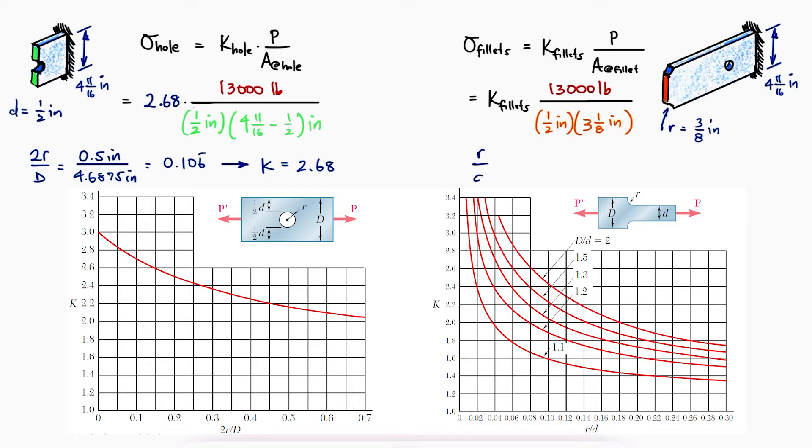For the fillet, the fillet radius over the smaller width would give us an x-axis value of 0.12 and the ratio of the widths would yield 1.5. The corresponding stress concentration factor value would therefore be 2.1.